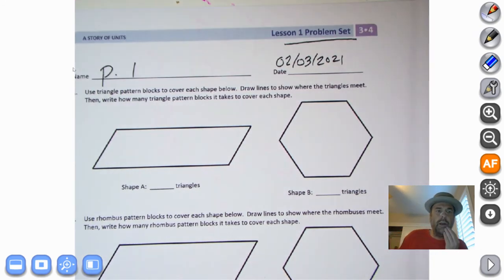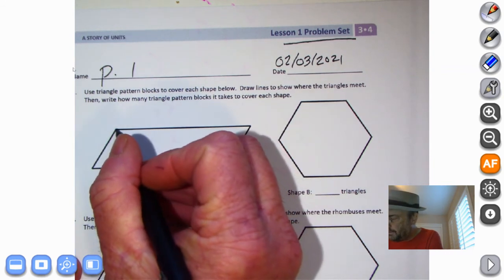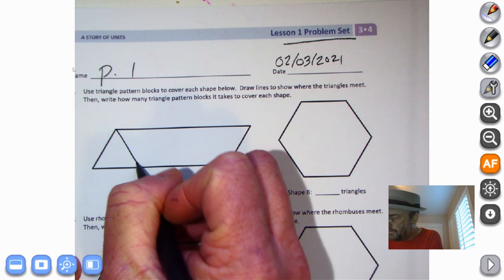It says use triangle pattern blocks. We're just going to use our regular triangles to cover each shape below. Draw lines to show where the triangles meet, then write how many triangle patterns it takes to cover each shape. So we're talking triangles. That's three corners, three sides. Look at that. There is a beautiful triangle.